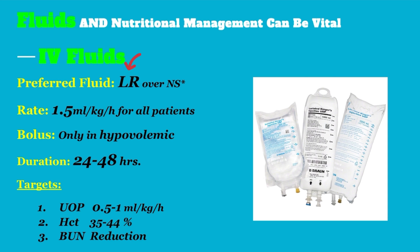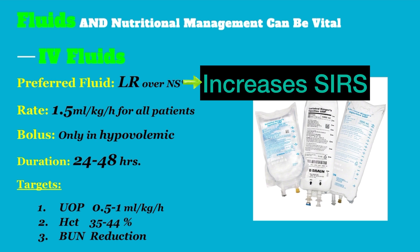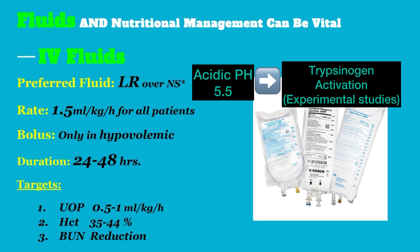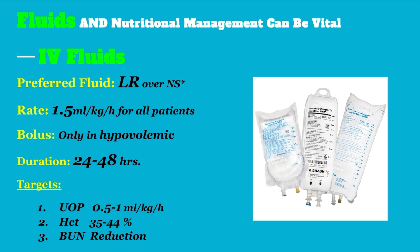The preferred fluid is Lactated Ringer's (LR). Studies comparing LR and normal saline show that normal saline increases the risk of SIRS, and because normal saline is acidic with a pH of 5.5, experimental studies show this acidic pH activates trypsinogen and can aggravate pancreatitis. So LR is preferred — with one exception: if pancreatitis is caused by hypercalcemia, we use normal saline, because LR contains calcium.